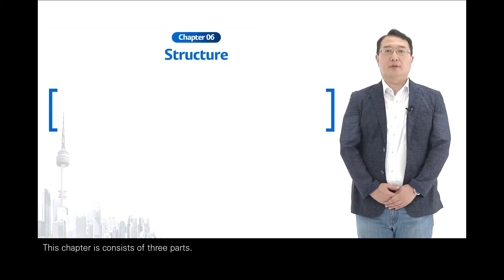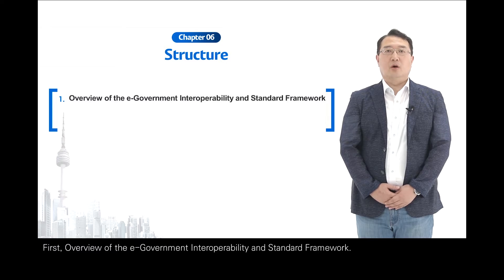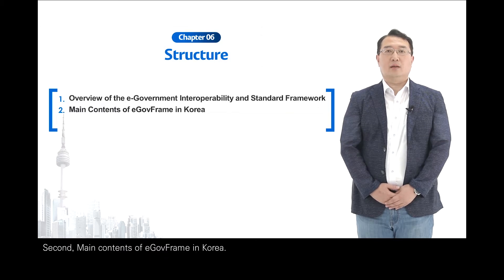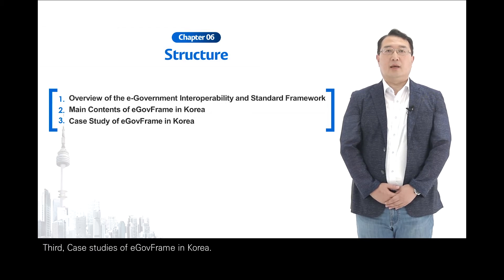This chapter consists of three parts. First, a view of the e-government interoperability and standard framework. Second, main contents of e-government frame in Korea. Third, case studies of e-government frame in Korea.